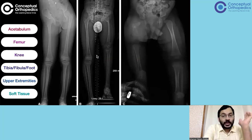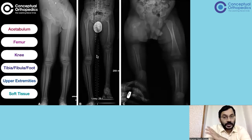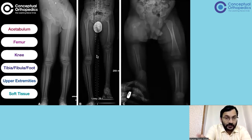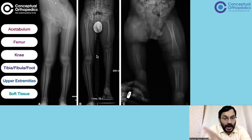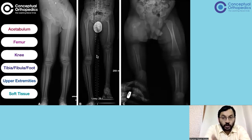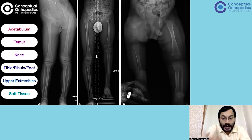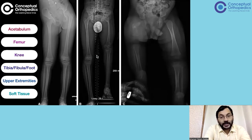Looking at the spectrum of these conditions, the different X-rays show varying acetabulum morphology, different forms of femur, and different types of knee involvement. There may or may not be tibia, fibula, and foot component problems. Upper extremities may or may not be involved, and we do not know how the soft tissues are — which muscles are active or absent, which arteries are present, etc. This is a wide spectrum where all of these different things can be involved.